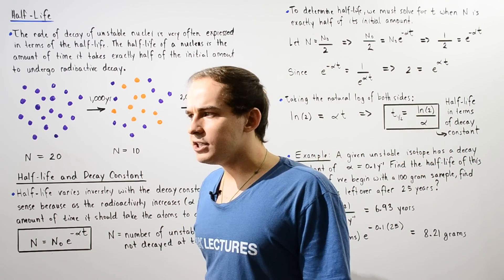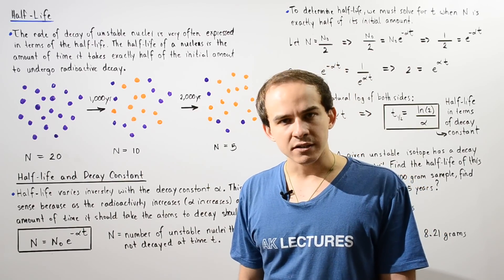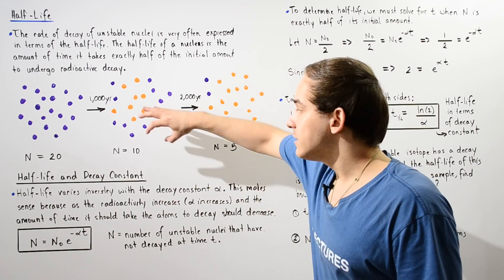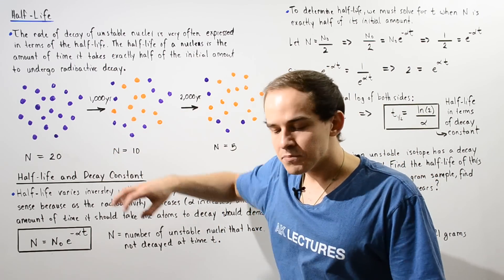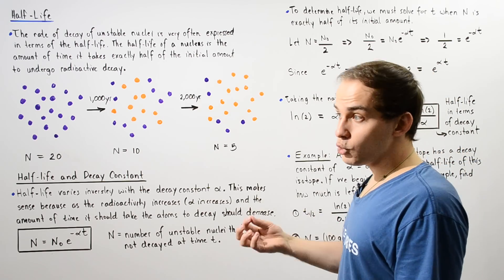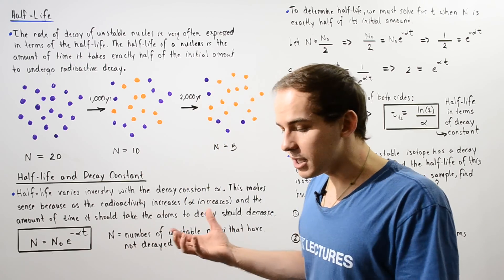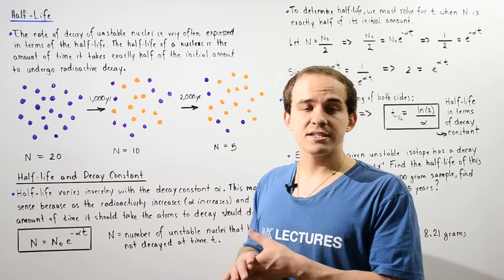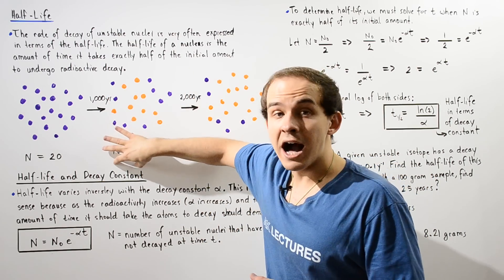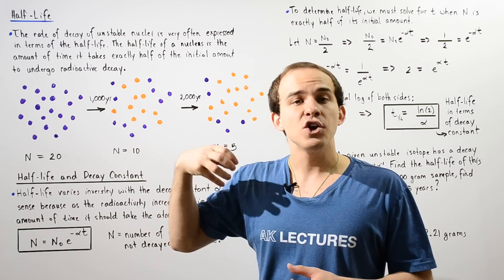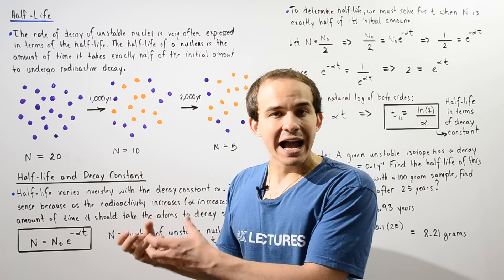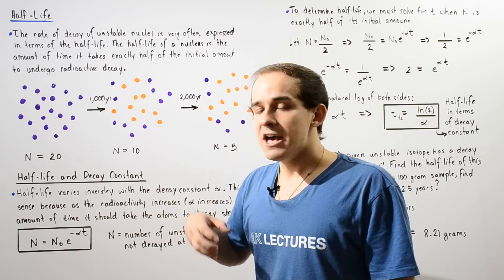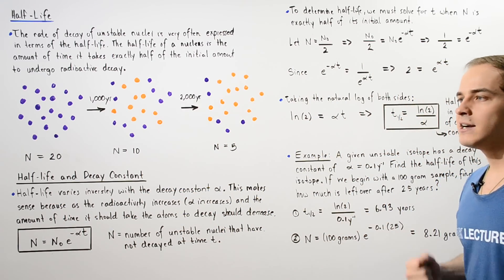Now how exactly do we calculate the half-life mathematically? There exists a relationship between the half-life and the radioactive decay constant. The decay constant, usually given by the symbol lambda or alpha, represents the radioactivity of our unstable atom. The greater the decay constant is, the more radioactive our atom is and the more likely it is to undergo radioactive decay — meaning half-life varies inversely with the decay constant alpha.